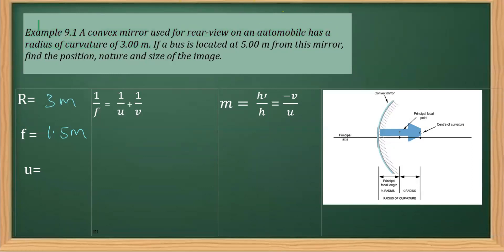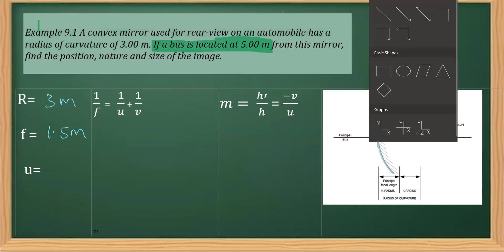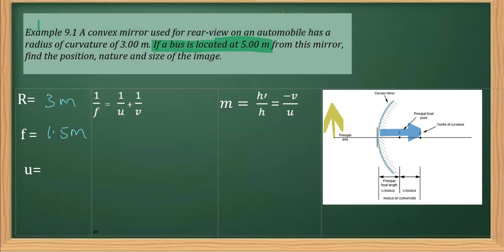Next is the distance of the object. As you can see here, the object is a bus located at a distance of 5 meters. As you can see from the diagram, the object must be somewhere on this side — to the left of the mirror. By convention, the object is always placed to the left of the mirror, so anything measured to the left of the mirror should be taken as negative.